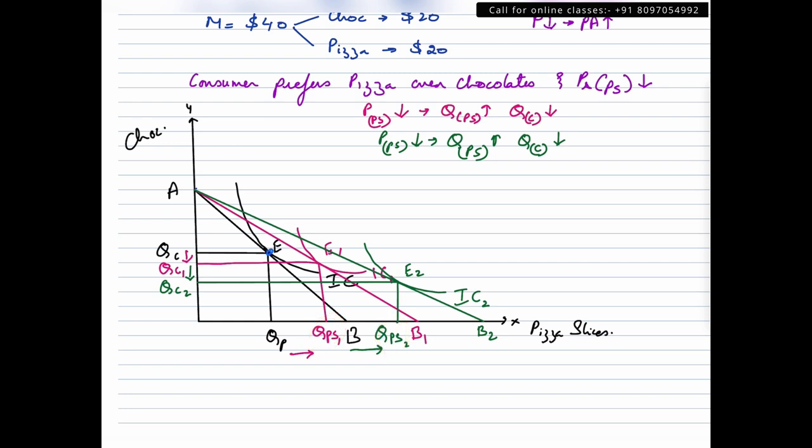Now if you join all these equilibrium points, I'm highlighting it with a different color, you could get something like this. So this is your PCC curve or a price consumption curve. Now in this case, a price consumption curve is downward sloping. Why is it downward sloping? Because pizza slices is a normal good. So we need to remember under normal goods, the price consumption curve would be a downward sloping curve.